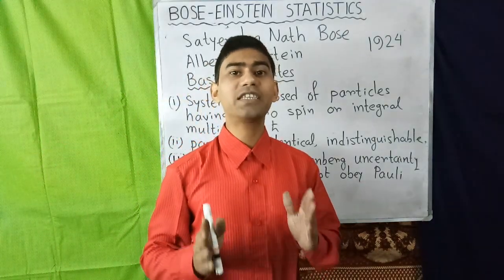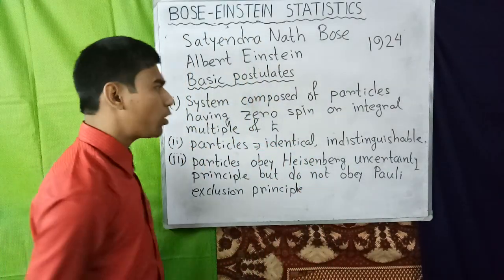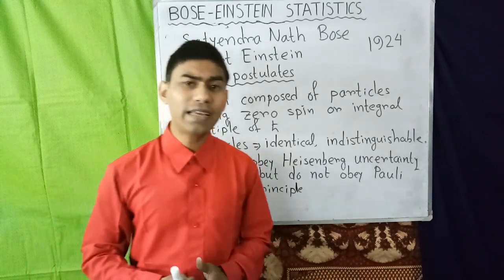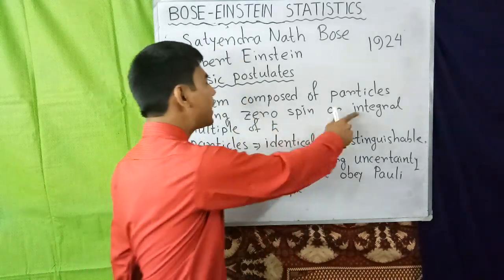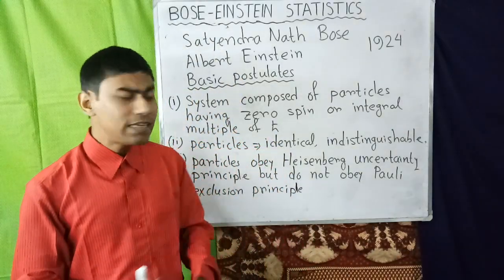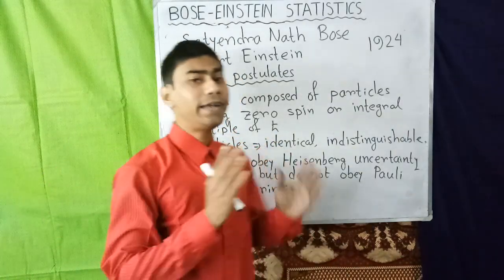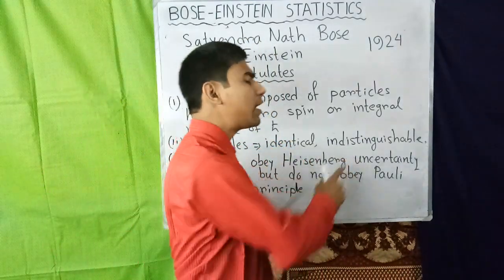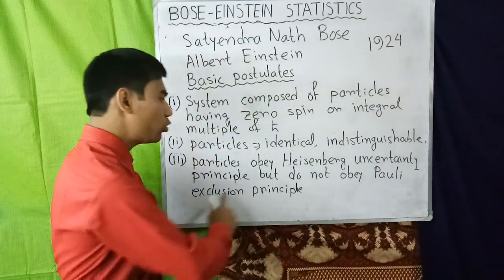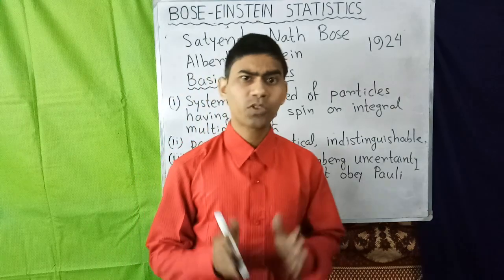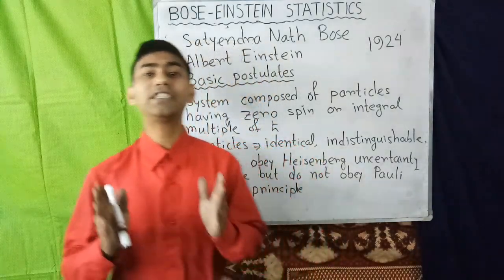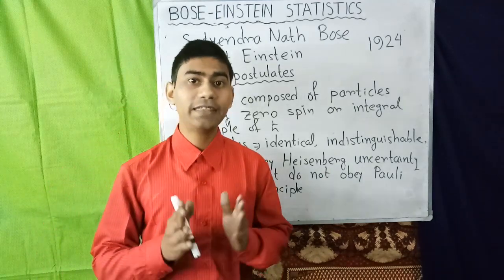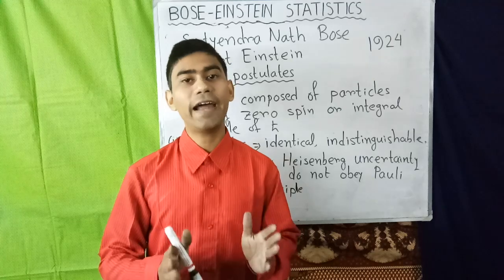The basic postulates of this statistics are: first of all, the system under consideration is composed of a large number of particles having zero spin or integral multiple of h-bar. Secondly, the particles are identical and indistinguishable. Thirdly, the particles obey the Heisenberg uncertainty principle, but they do not obey the Pauli exclusion principle. So for a given energy level, there exists a large number of quantum states, and in any quantum state, there can be any number of bosons or none at all.